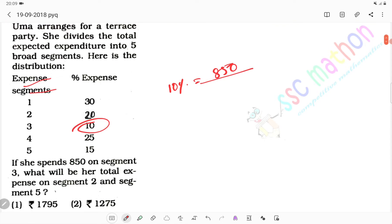Expenses will be segment 2 and segment 5, 20 and 15, meaning 35% will be. So 10% equals to 850, 35% equals to 85 into 35. How much?